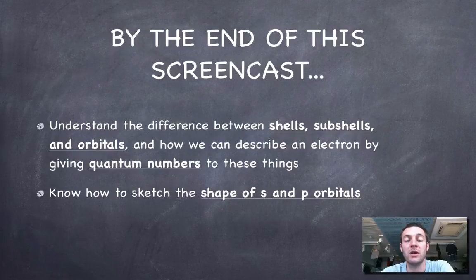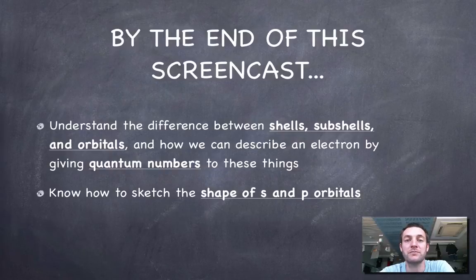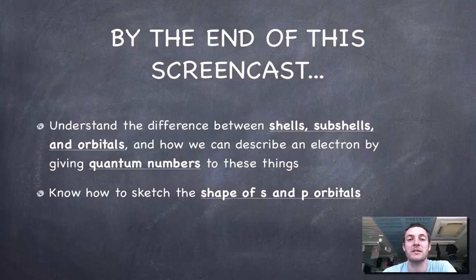You'll be able to state which shell, subshell or orbital an electron is in by using a series of numbers. And also you'll know what these orbitals look like, and hopefully you'll be able to sketch some of the simpler looking orbitals — the S and P orbitals.